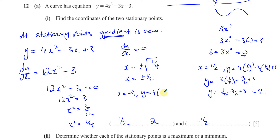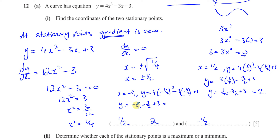When x equals negative a half, y equals 4 times negative a half cubed, minus 3 times negative a half, plus 3. Negative a half cubed is minus 1 over 8, so 4 times that is minus a half. The next term is plus 3 over 2, then plus 3. That gives 3 over 2 minus a half equals 1, and 1 plus 3 is 4. So when x equals negative a half, y equals 4. Our two stationary points are: one half and 2, and negative one half and 4.